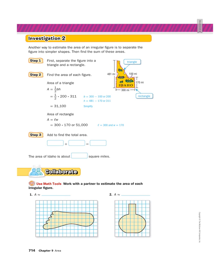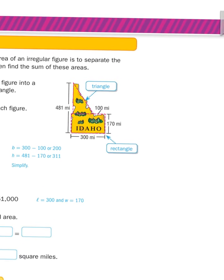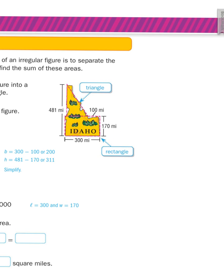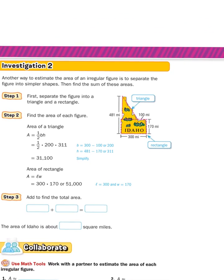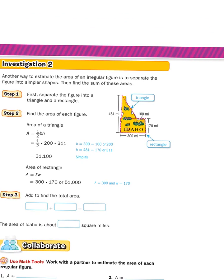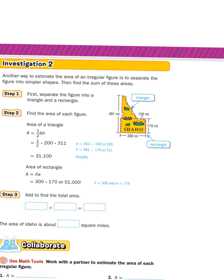They give us dimensions: 481 miles from north to south and 300 miles wide. Idaho kind of looks like a rectangle at the bottom and a triangle at the top. Find the area of those two figures and add them together for an approximate area. For the rectangle: 300 miles wide by 170 miles tall. 300 times 170 is 51,000 — so the rectangular bottom is about 51,000 square miles.